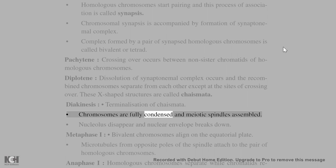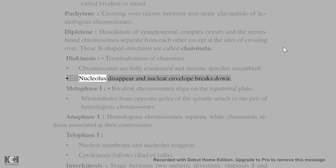Diakinesis: Terminalization of chiasmata. Chromosomes are fully condensed and meiotic spindle is assembled. Nucleolus disappears and nuclear envelope breaks down.